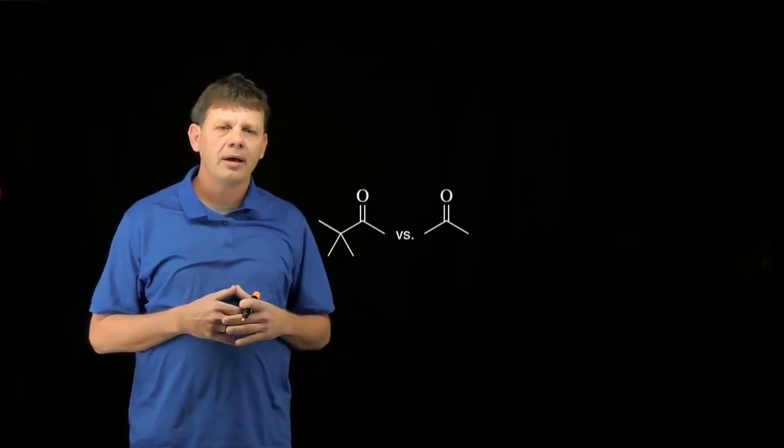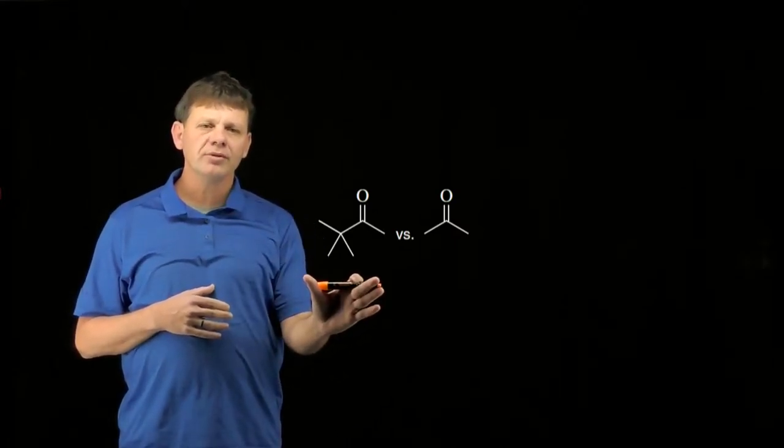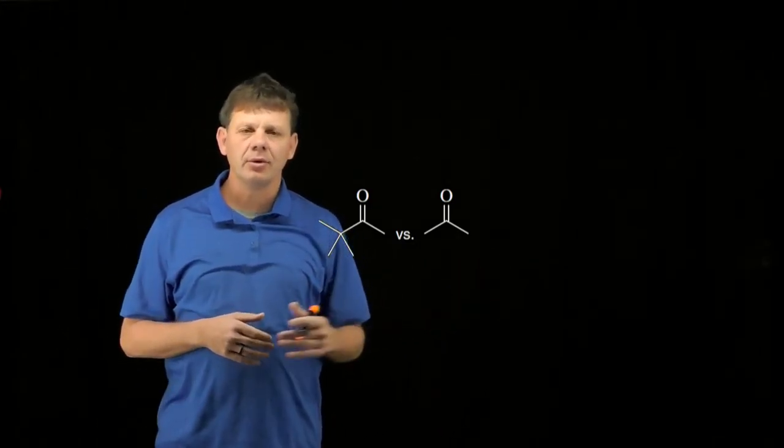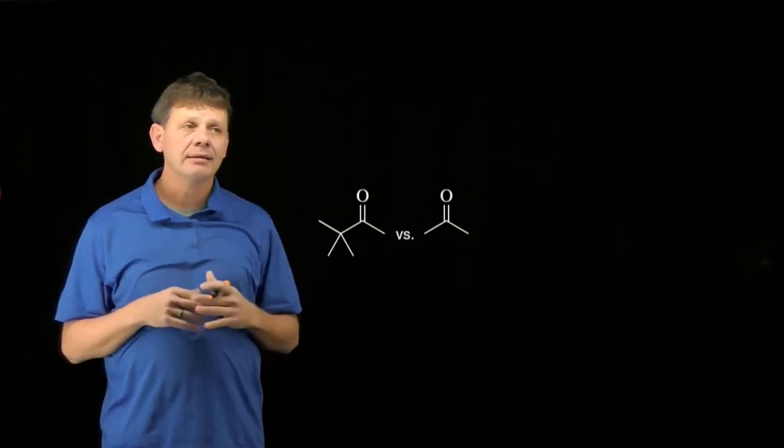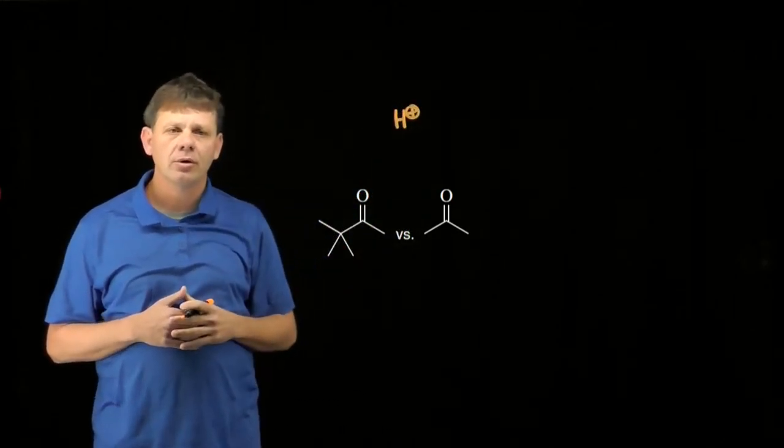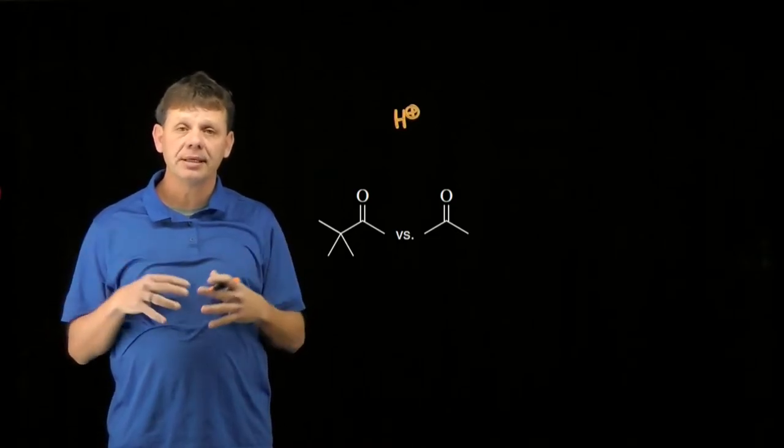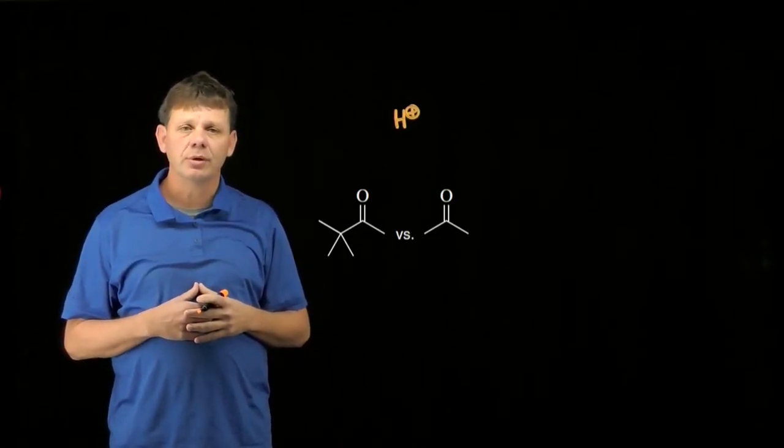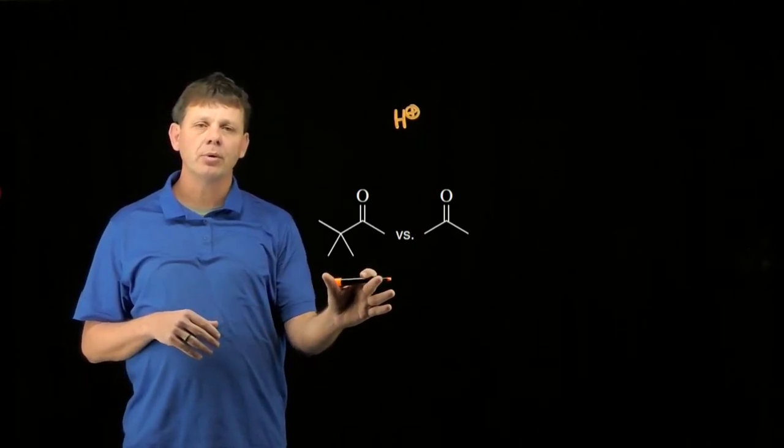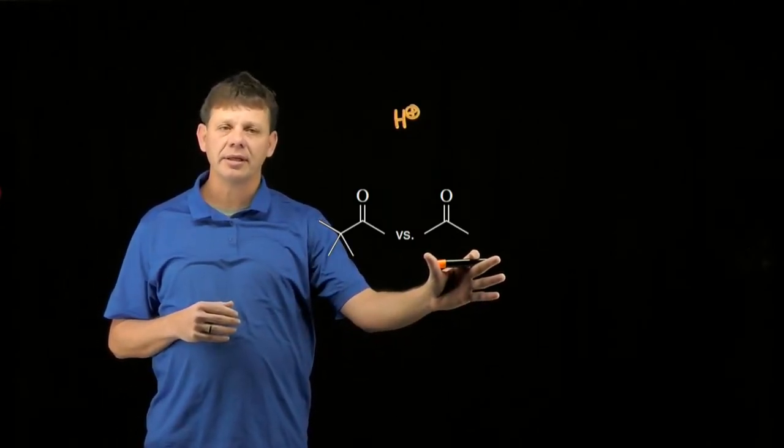This assessment points out that there's significantly more steric hindrance in the ketone on the left than there is in the ketone on the right. And yet grabbing a proton occurs with equal rate, equal speed, and equal efficiency for each. How can it be that a sterically hindered molecule would protonate at the same rate as a non-sterically hindered molecule?